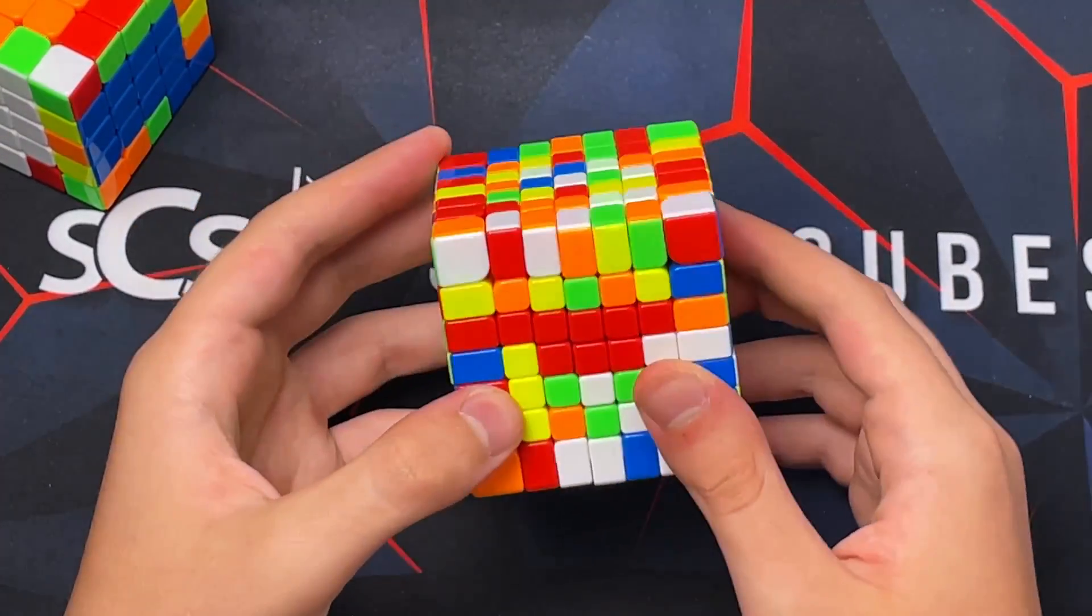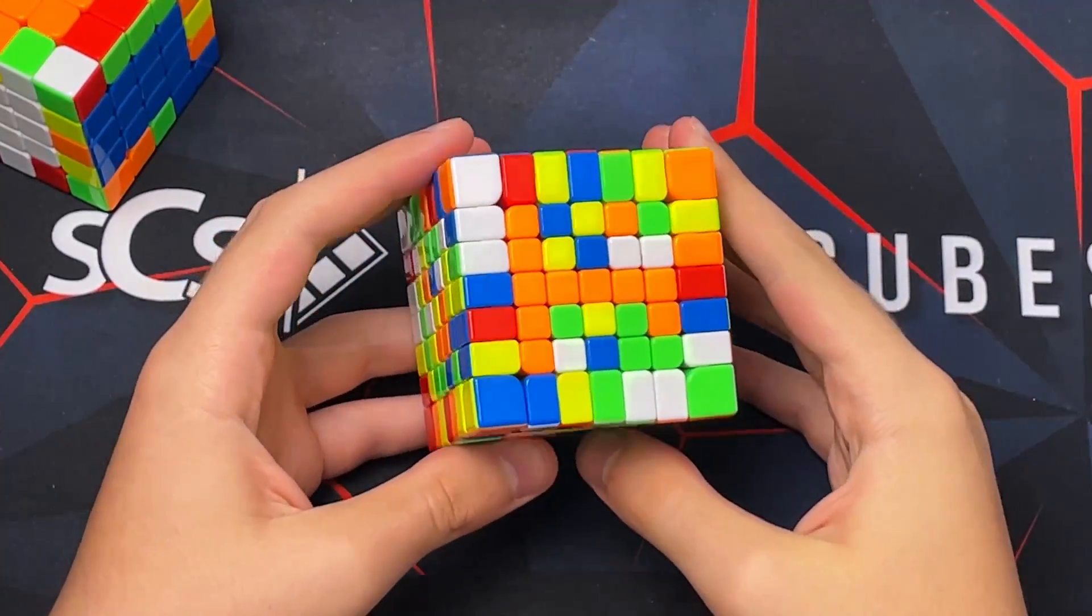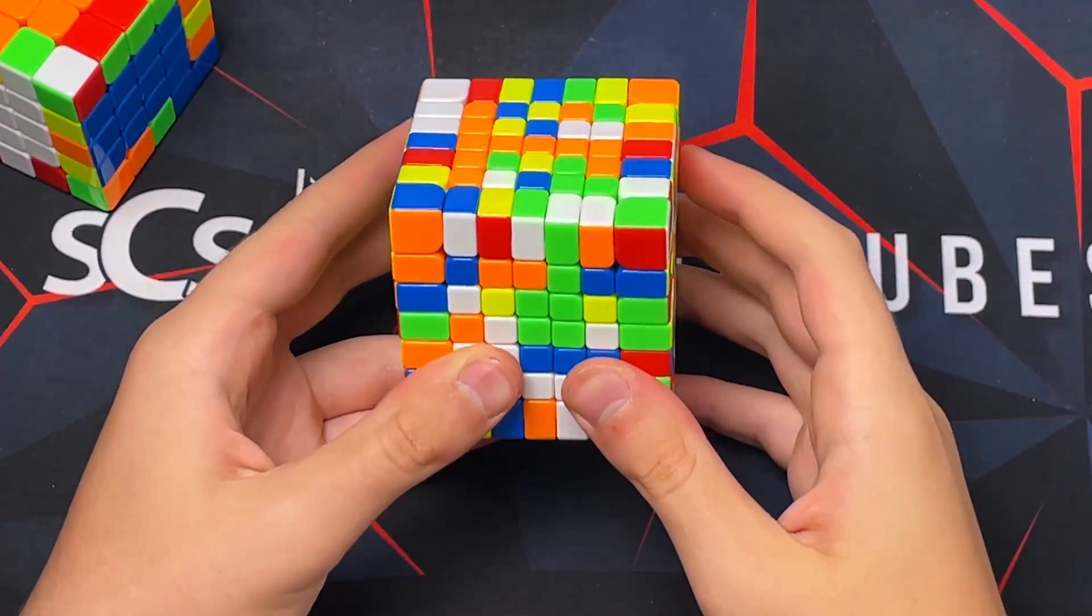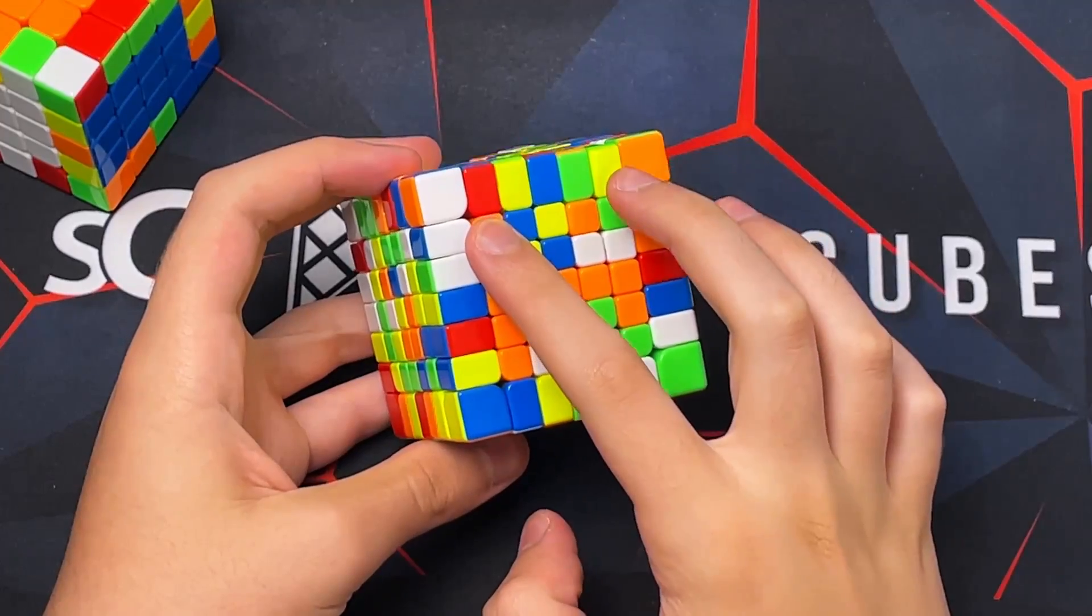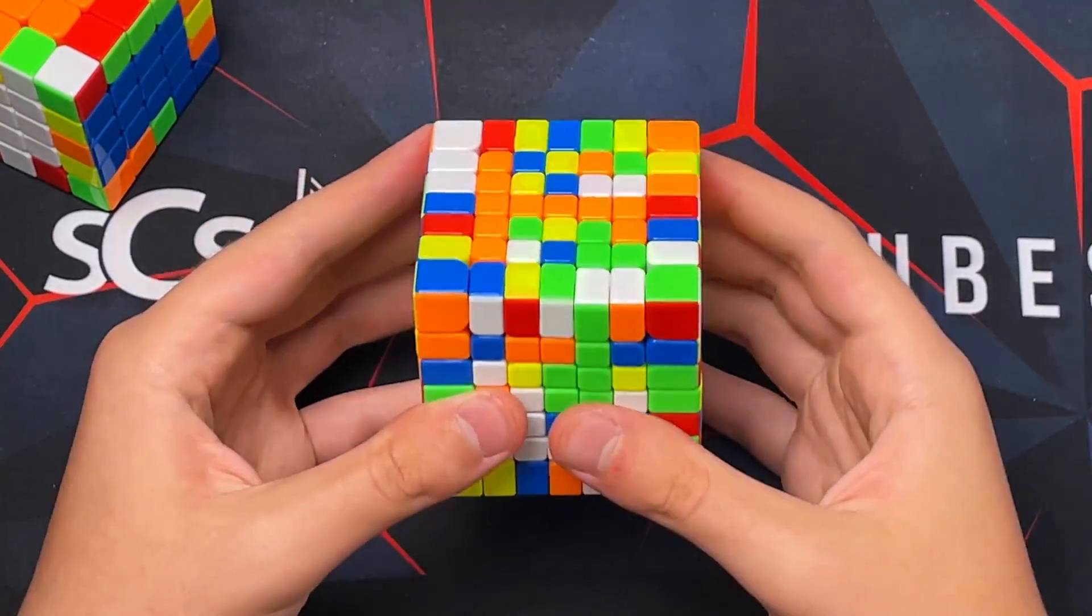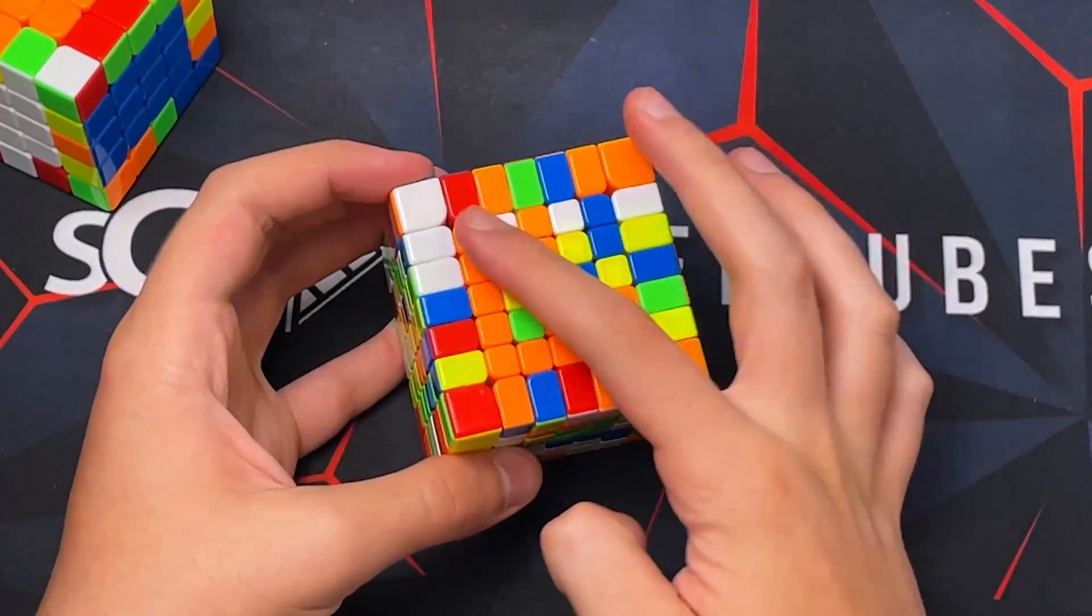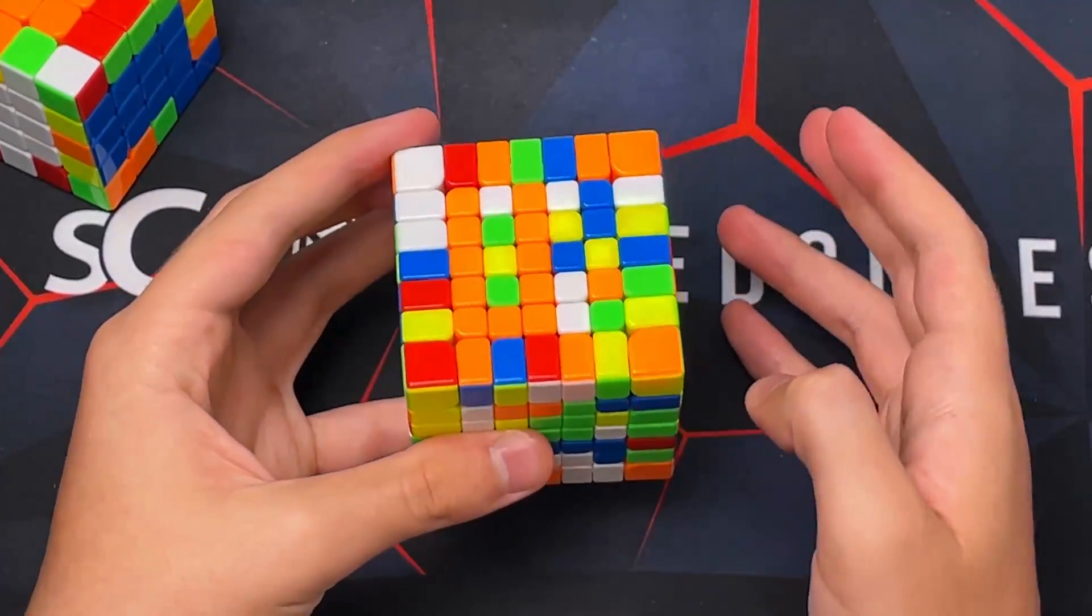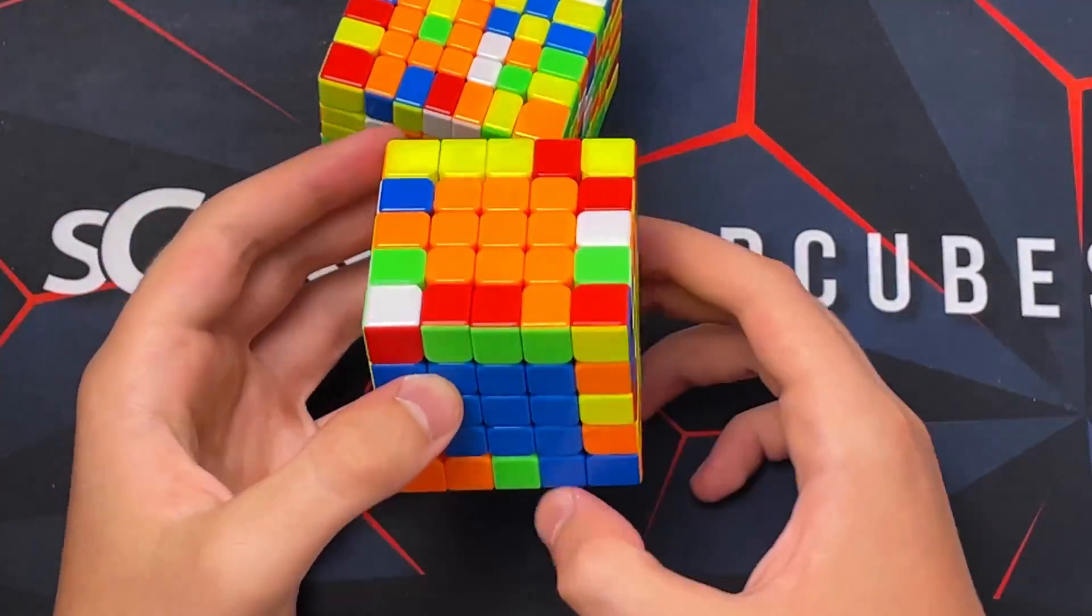One more thing is the T-case. These are obviously not all of them, but the T-case is very helpful for 7x7 to know that if you do this and then come back down, it'll make you two bars. Stuff like this from 5x5 is very helpful to learn.